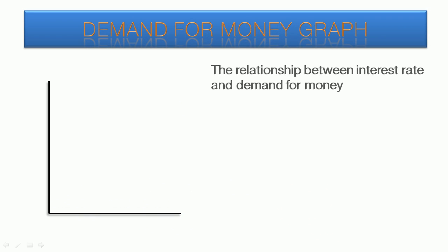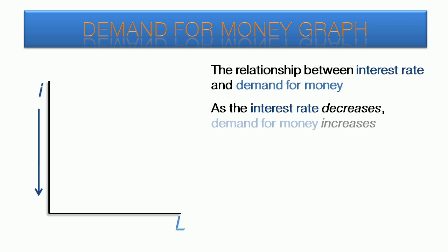Now we're going to examine this relationship graphically. Interest rate, the independent variable, goes on the y-axis, because it is going to be related to the LM graph, which has interest rates on the same axis. Demand for money, the dependent variable, goes on the x-axis. As the interest rate decreases, the demand for money increases, which gives us the downward sloping demand for money curve.